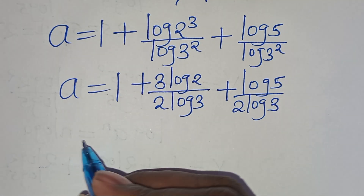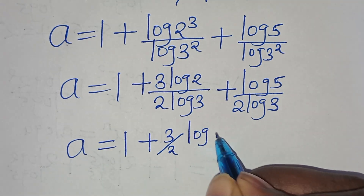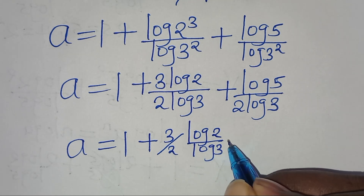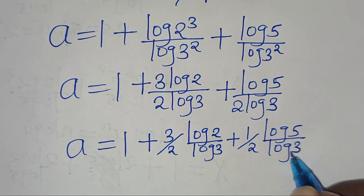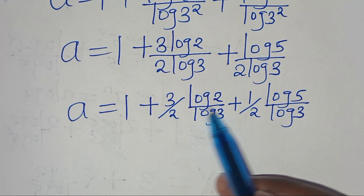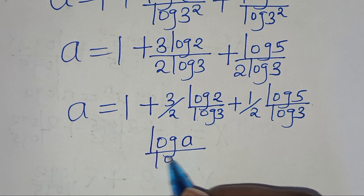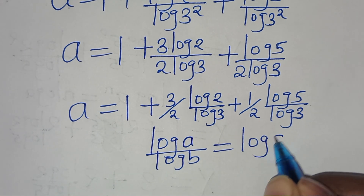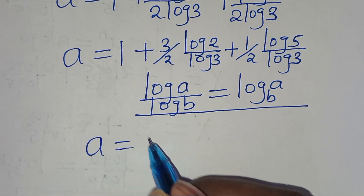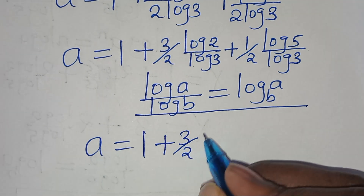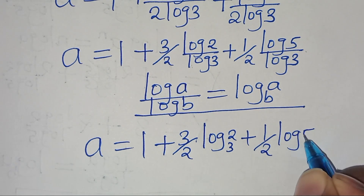The next step: we have a is equal to 1, plus 3 over 2 times log 2 divided by log 3, then plus log 5 divided by log 3. Now log 2 over log 3 and log 5 over log 3 are in the form log(a) divided by log(b), which we can express as log base b of a. Applying this property, a is equal to 1, plus 3 over 2 times log base 3 of 2, then plus log base 3 of 5.